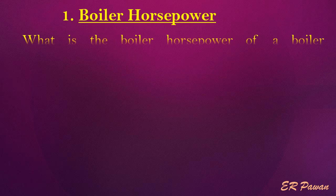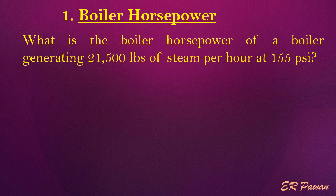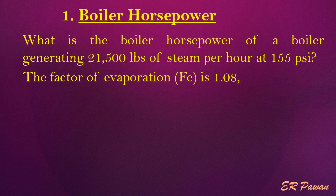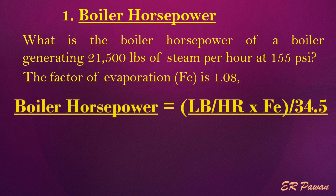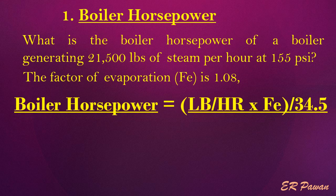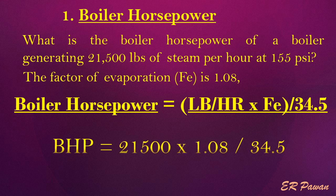Formula 1 — Boiler Horsepower. What is the boiler horsepower of a boiler generating 21,500 pounds of steam per hour at 155 pounds per square inch? The factor of evaporation is 1.08. BHP equals pounds per hour multiplied by evaporation factor divided by 34.5. Where BHP = boiler horsepower, pounds per hour = pounds per hour, FAE = factor of evaporation. Let's put the value in the formula.